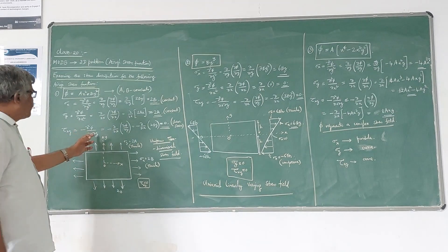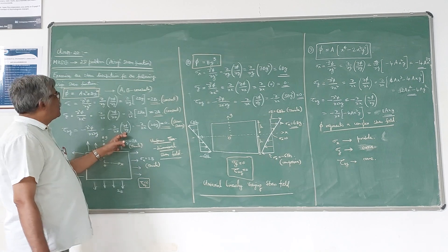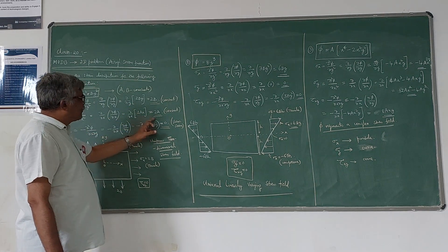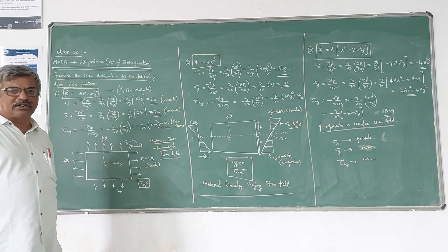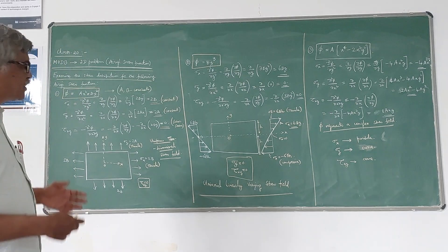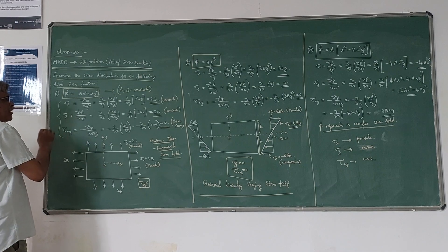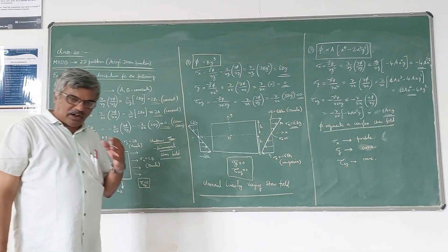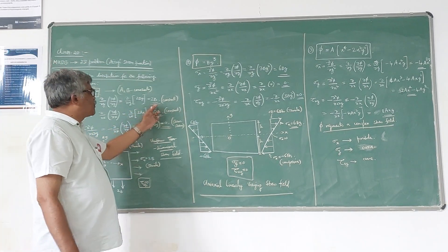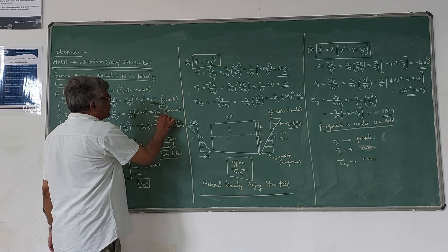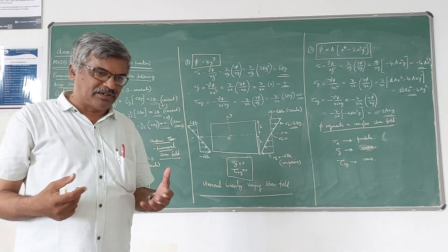For τxy, we take −∂/∂x of ∂φ/∂y. We already found ∂φ/∂y = 2by. If you differentiate that with respect to x, it becomes 0 because it is a constant with respect to x. That means there is no shear stress here. So σx = 2b, which is a constant.